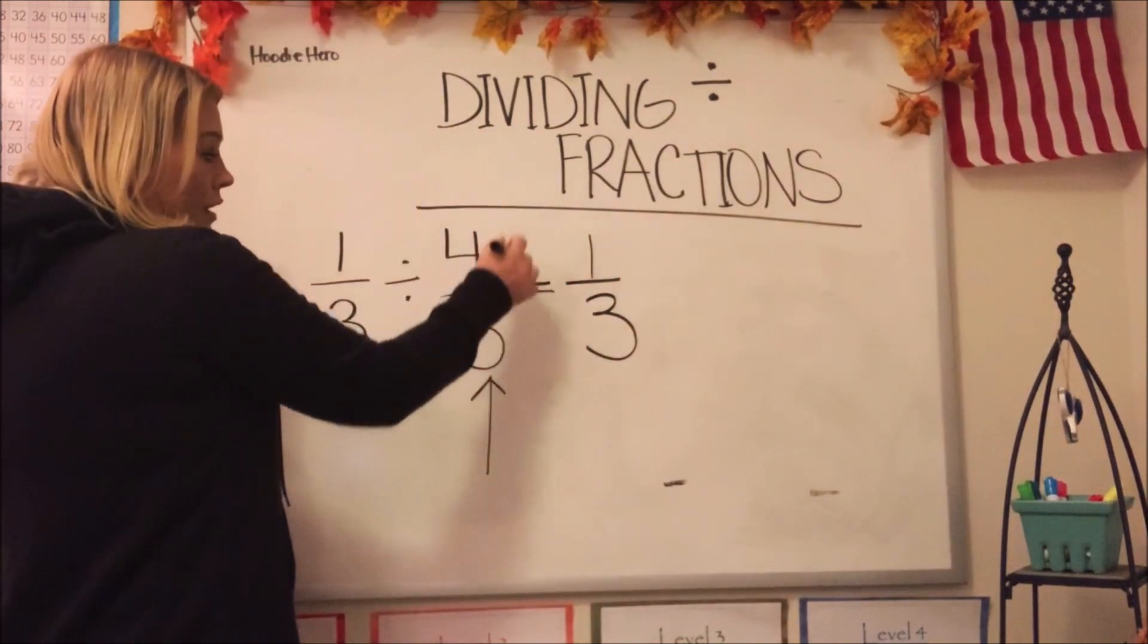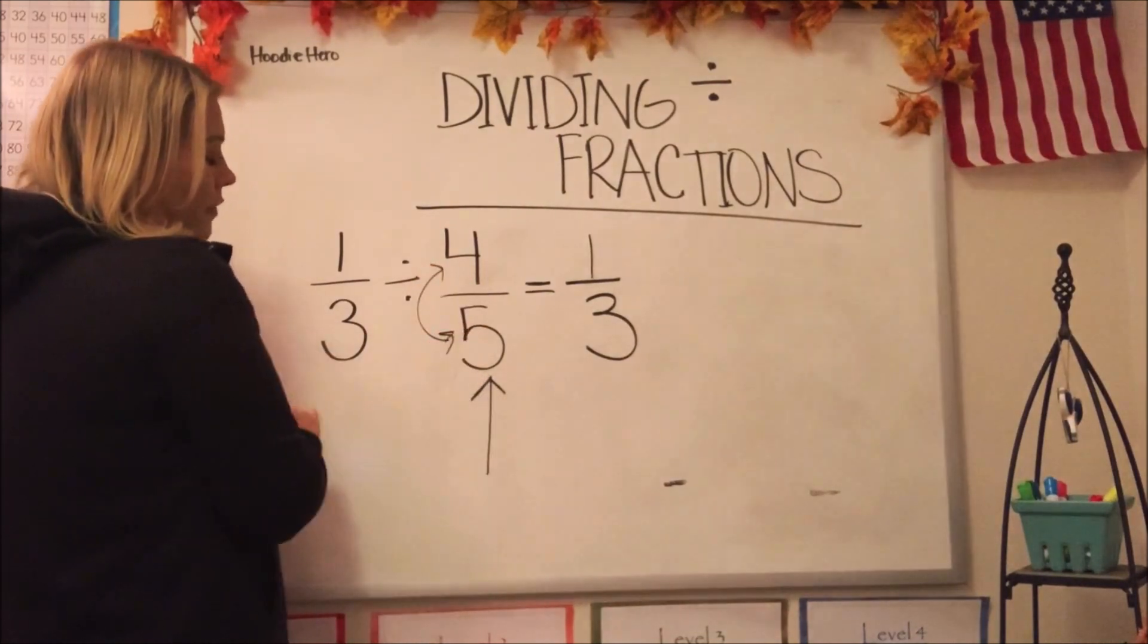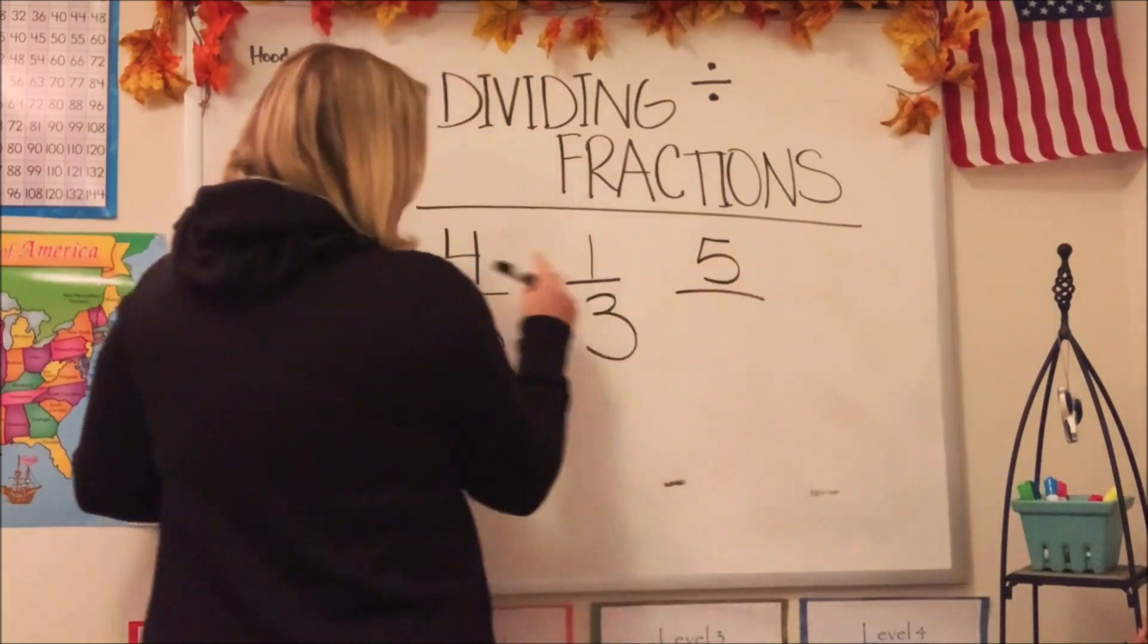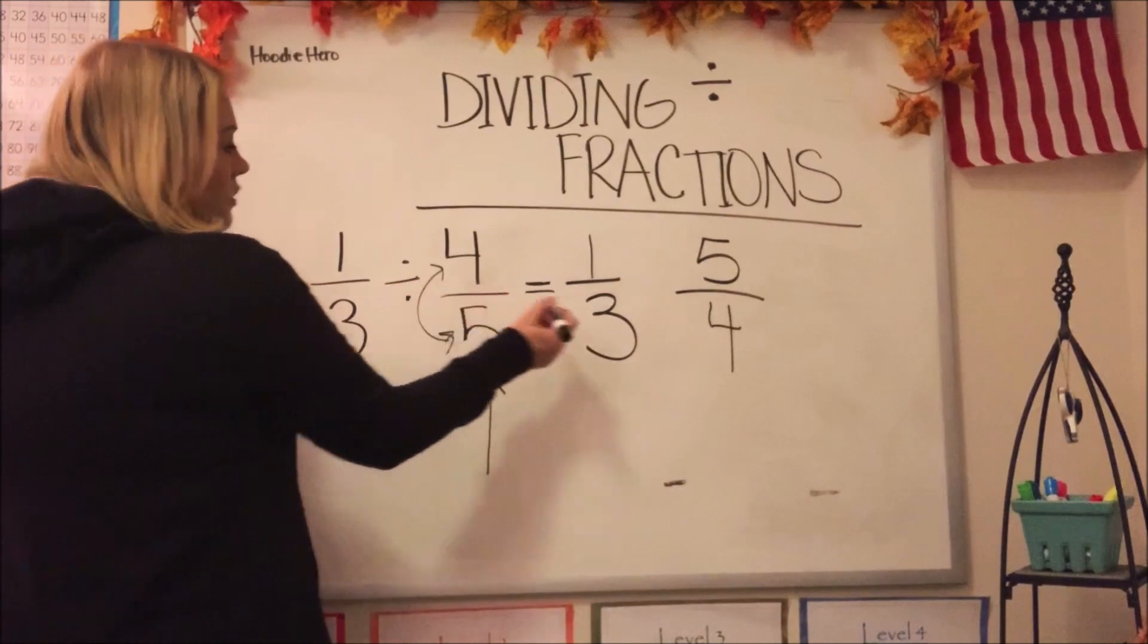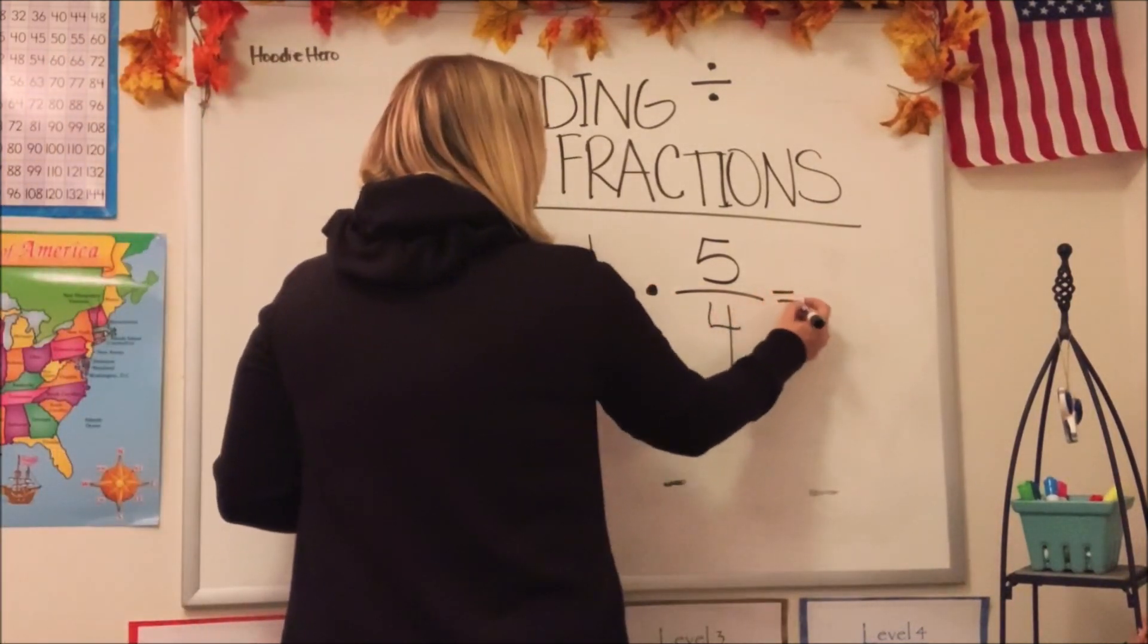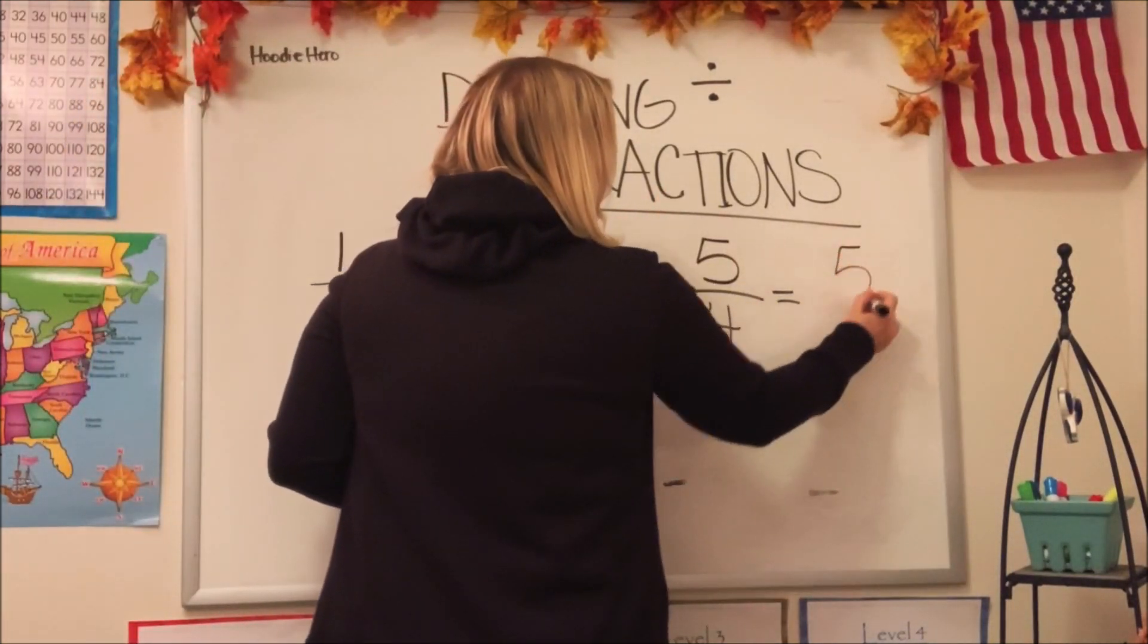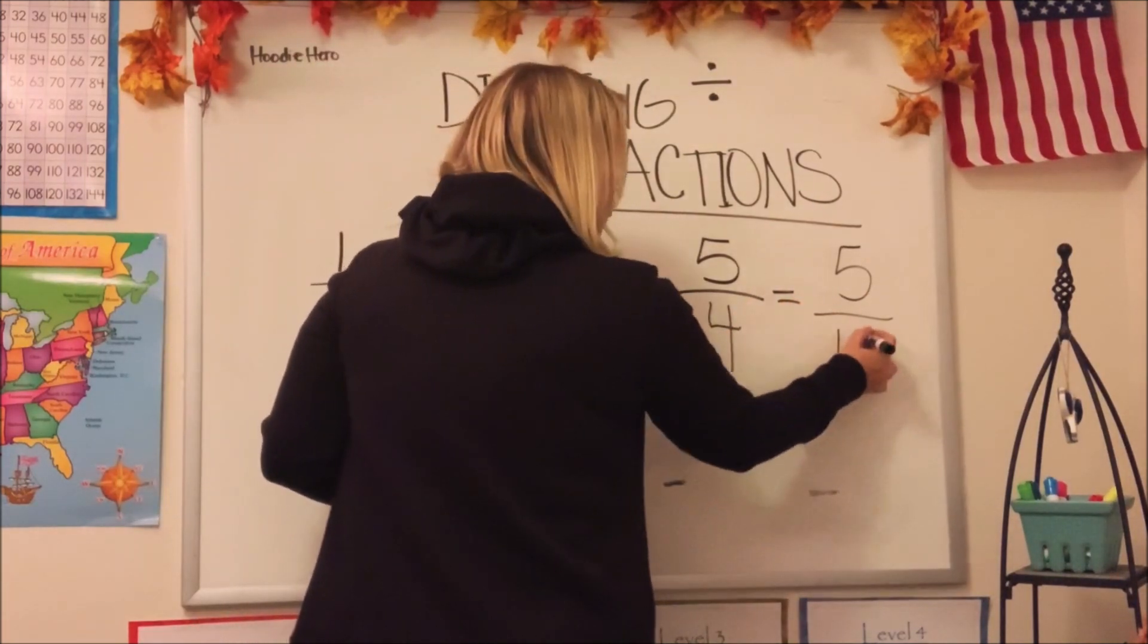We're going to invert the second fraction, right? They're going to change places. So that means the five is going to be the numerator. The four is going to be the denominator. And we're going to change this division into multiplication. From here, we just go straight across. Easy peasy. One times five is five. Three times four is twelve.